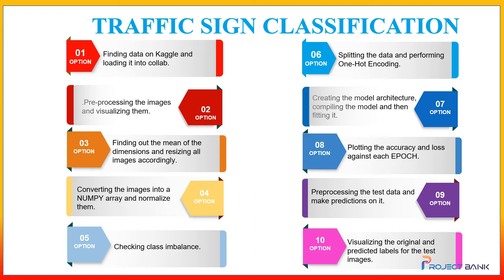Then we will create the model architecture, compile the model, and fit it for any number of epochs. We will plot the accuracy and loss against each epoch. After that, we will pre-process the test data, make predictions on it, and finally visualize the original as well as the predicted labels for the test images.